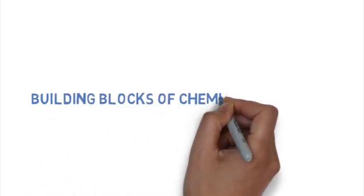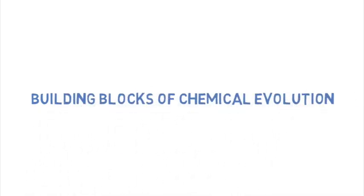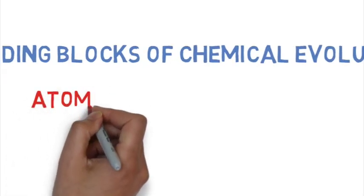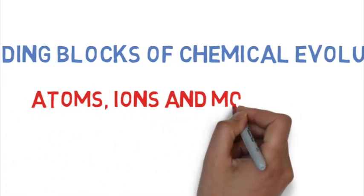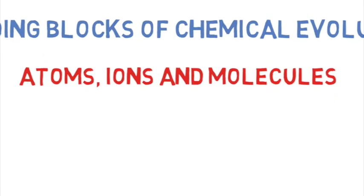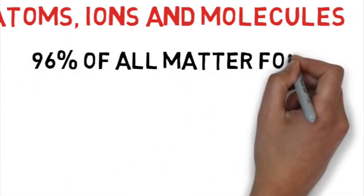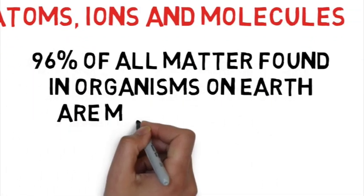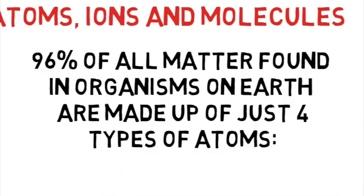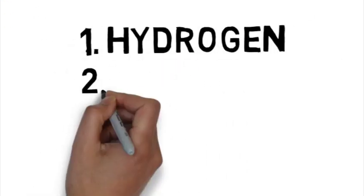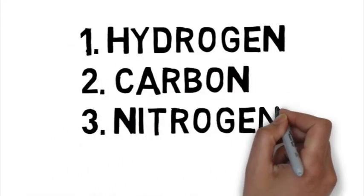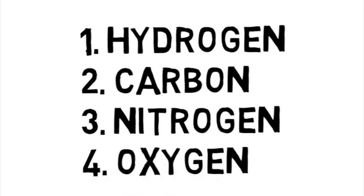If we're going to go by the theory of chemical evolution, we have to ask ourselves: what are the building blocks? That involves atoms, ions, and molecules. There's a very important fact: 96 percent of all matter found in organisms on this planet is either hydrogen, carbon, nitrogen, or oxygen.